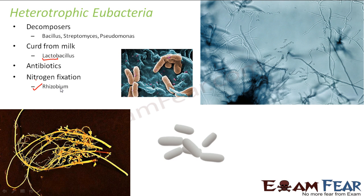So these are some important uses of heterotrophic bacteria — it is not only diseases which these bacteria cause, they can also be beneficial. While talking about decomposers, I mentioned Bacillus, Streptomyces, and Pseudomonas. Bacillus helps in decomposing dead plants as well as food materials. Streptomyces again helps to decompose plants. Pseudomonas primarily helps in decomposing oil. So you have different types of bacteria to decompose different types of things.